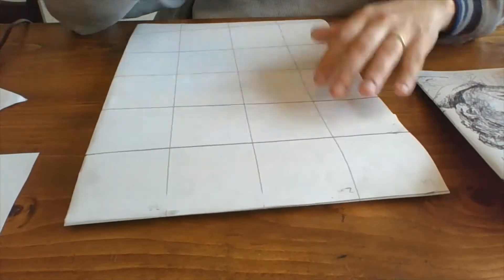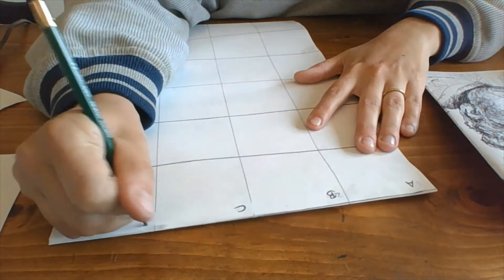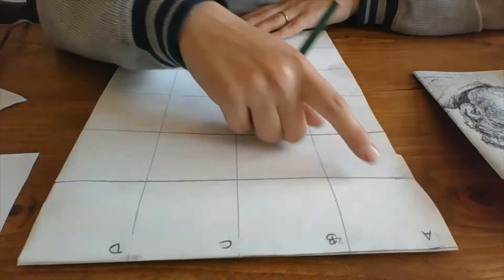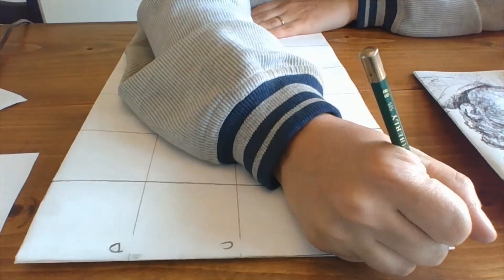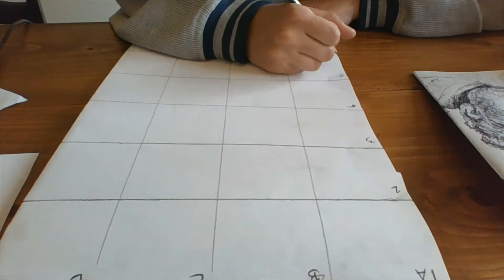We are going to label the boxes across A, B, C, and D. And we're going to label the ones on the bottom: one, two, three, four, five, six.